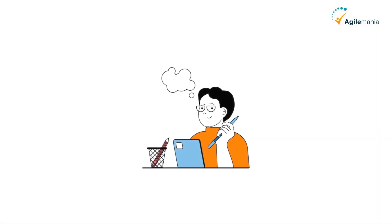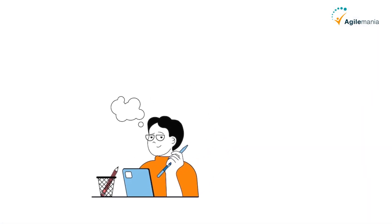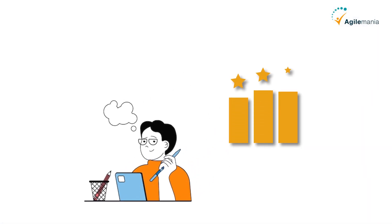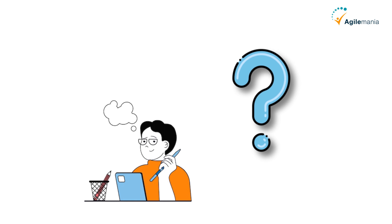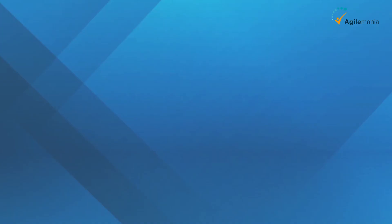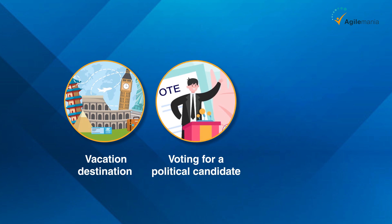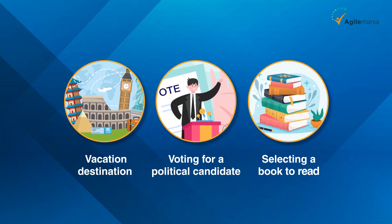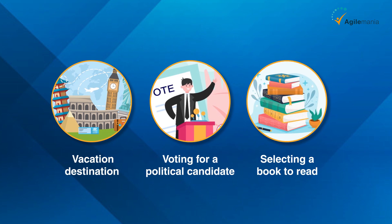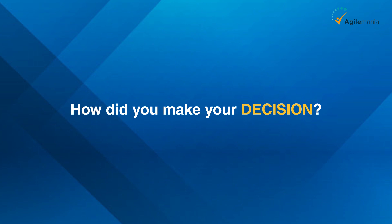Have you ever been in a situation where you had to rank several options based on your preference but you couldn't decide which one was the best? Maybe you were choosing a vacation destination, voting for a political candidate, or selecting a book to read. How did you make your decision?